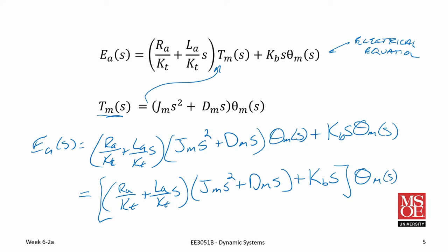One thing you may notice is we have a third order system. It is common practice with motor models to ignore the inductance L sub A, because L sub A is much smaller than R sub A, and therefore its effect on the startup properties of the DC motor is somewhat negligible. The transient effect it causes goes away very quickly, so often times we let L sub A equal zero.